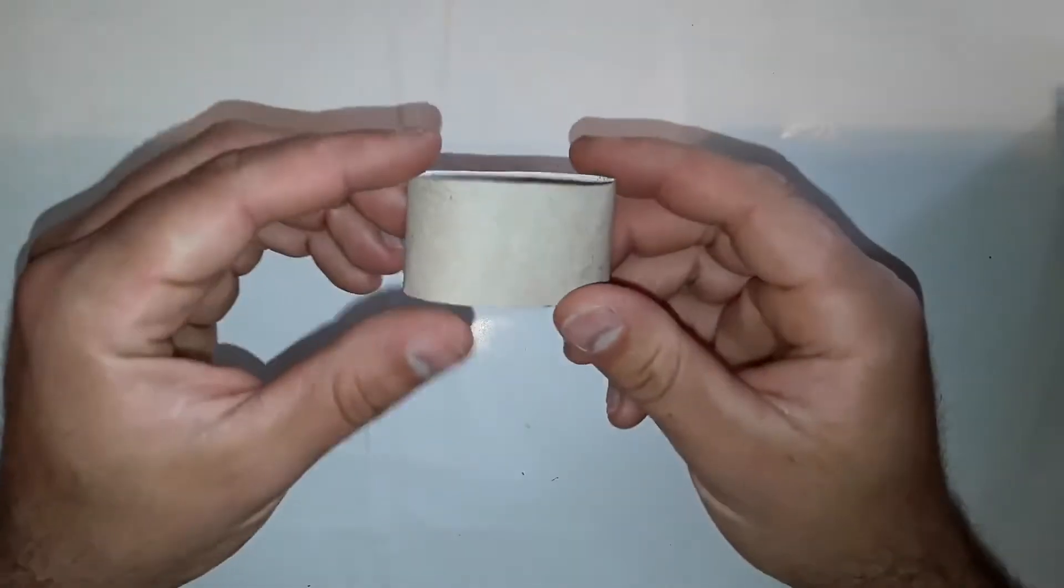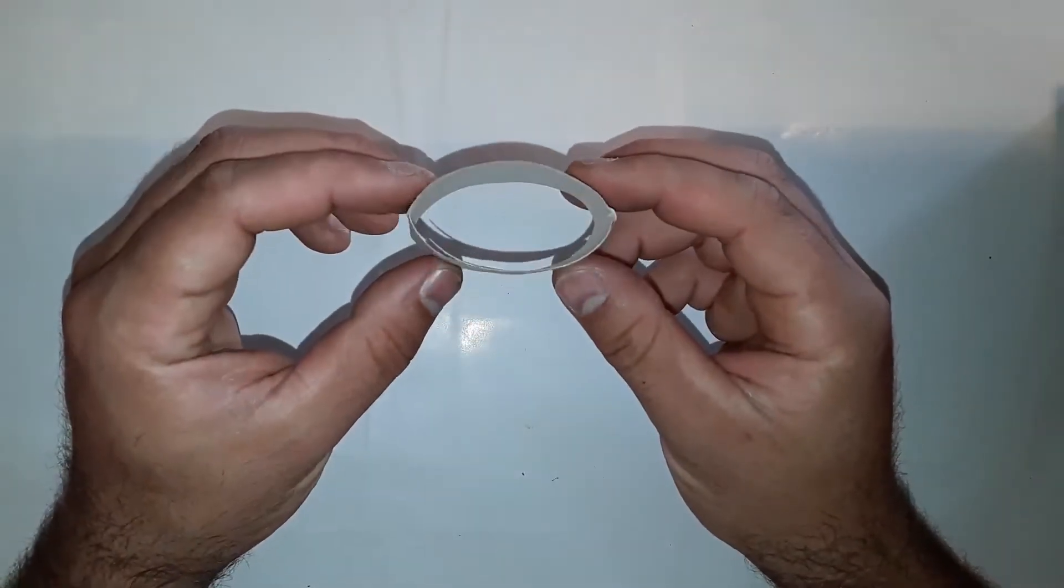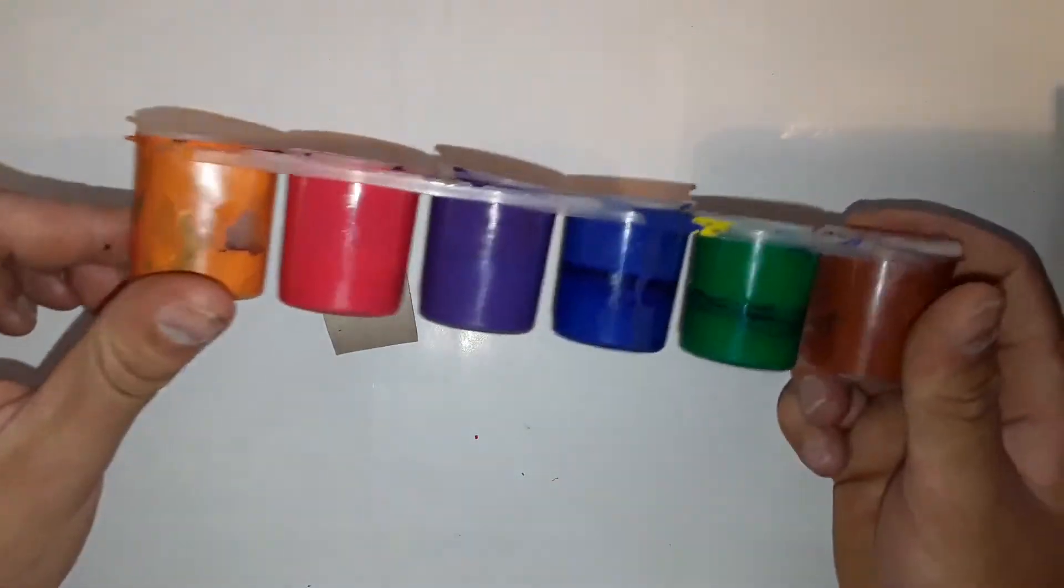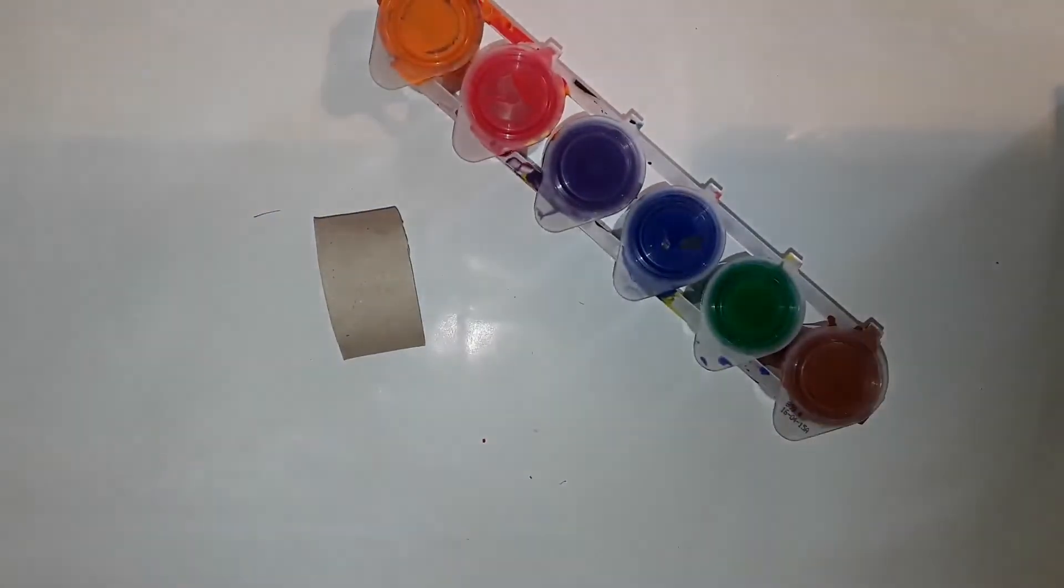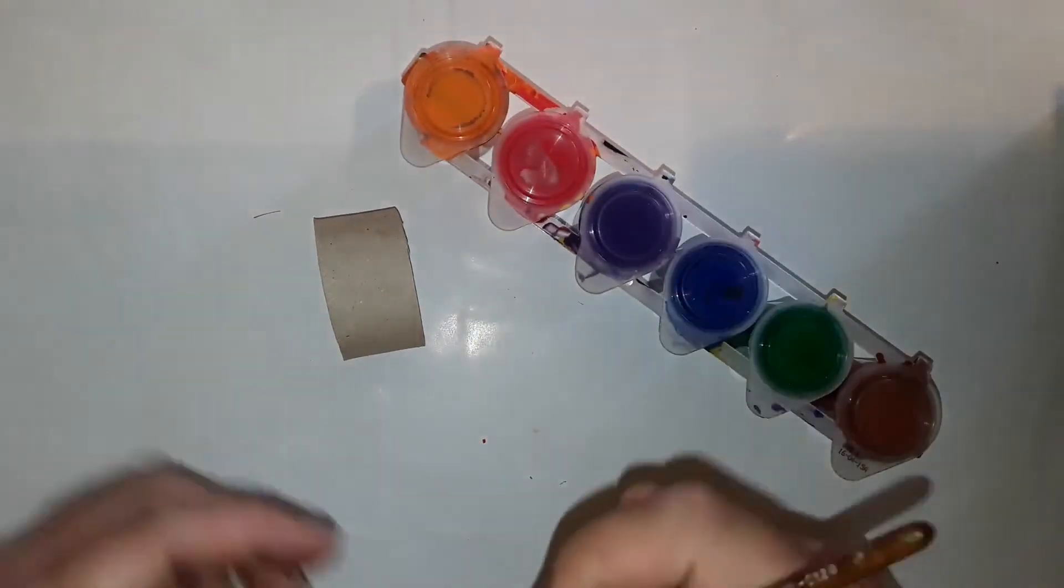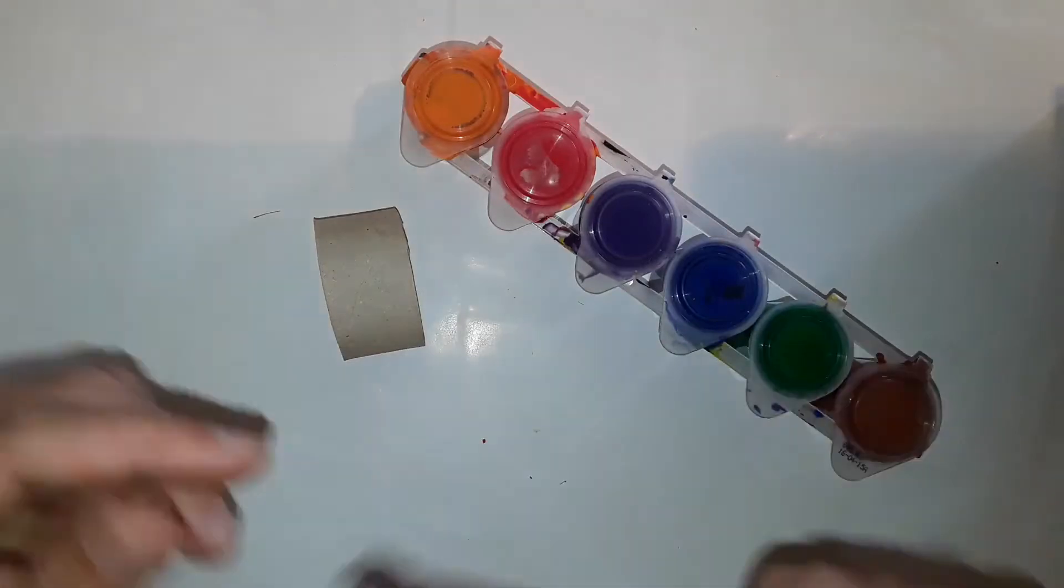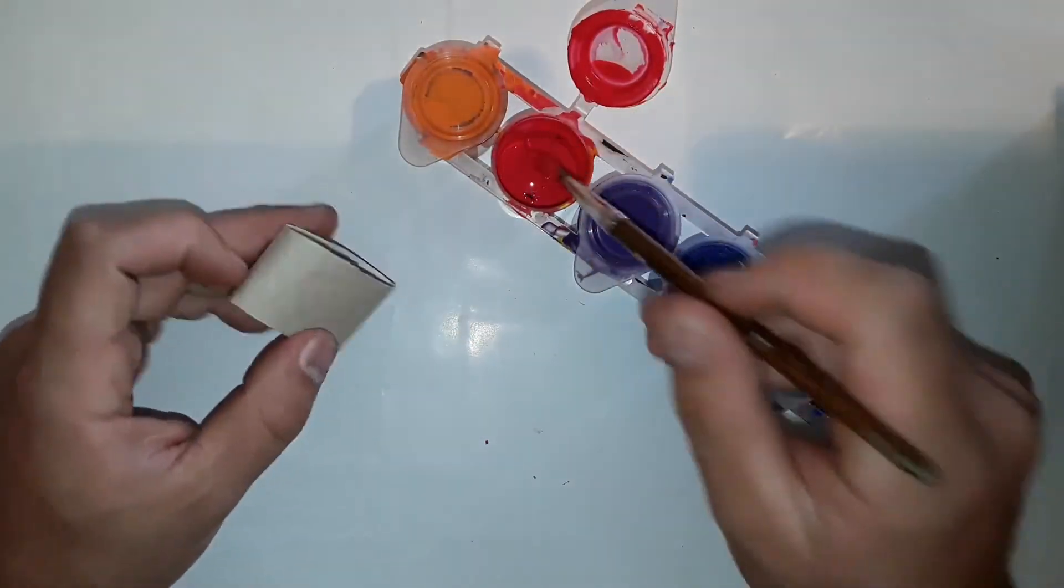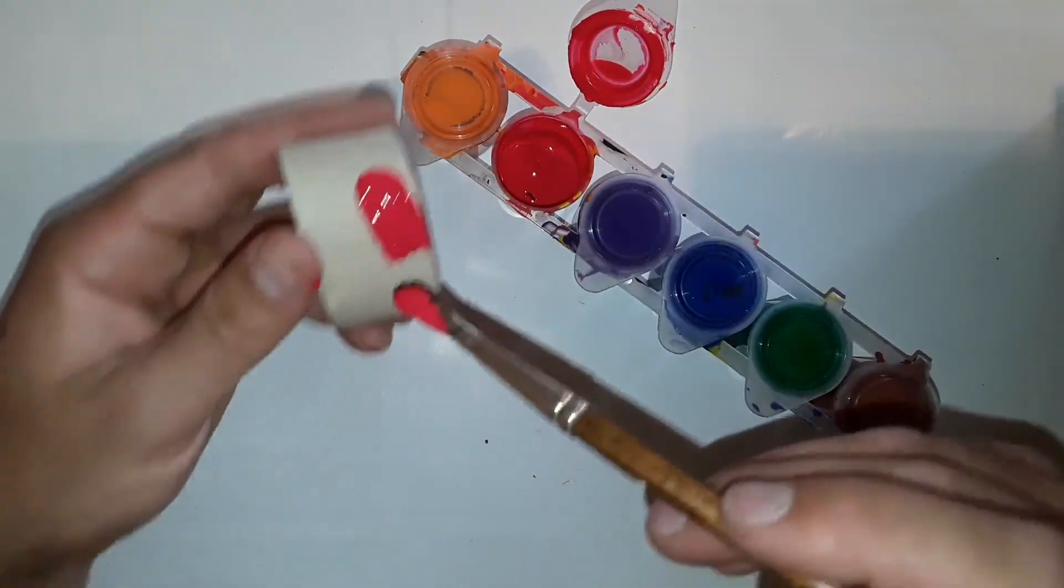In the second step, the toilet paper rolls are colored. For this you take one part, the gouache or acrylic paint, and of course a brush.